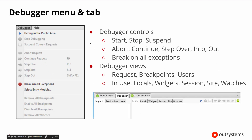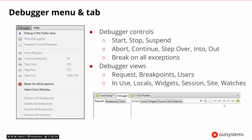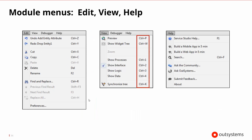We also have the debugger menu that shows us all of the debugging controls, and the debugging controls are available in the debug tab at the bottom as well. Once we start the debugger, you can do the classic step over, step into, break on all exceptions, and stop the debugger. There are a lot of good debugging capabilities, and we can get to those through the menu or the tab — typically we work with the tab instead.